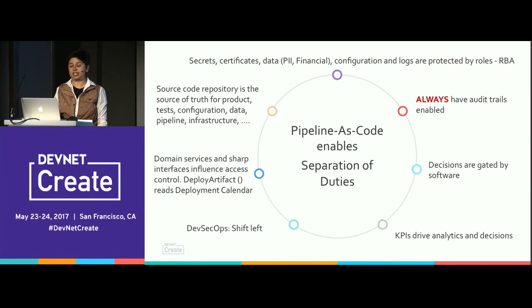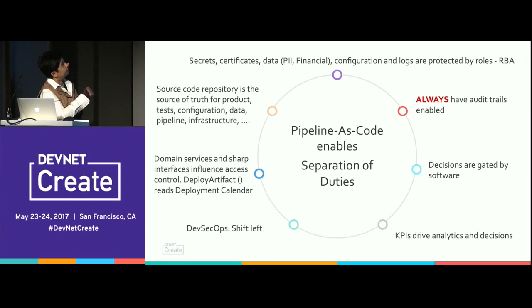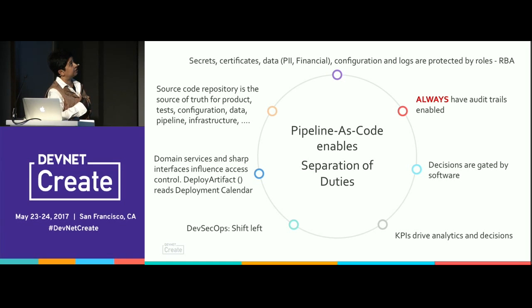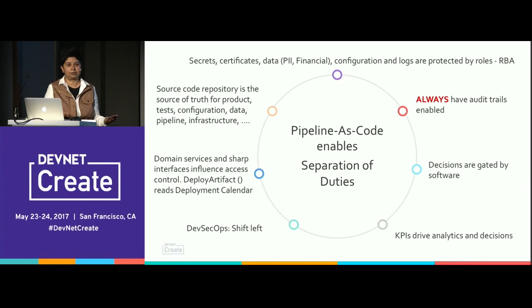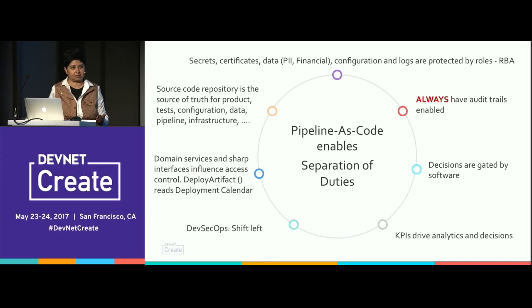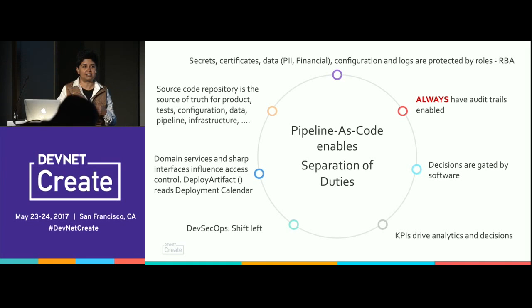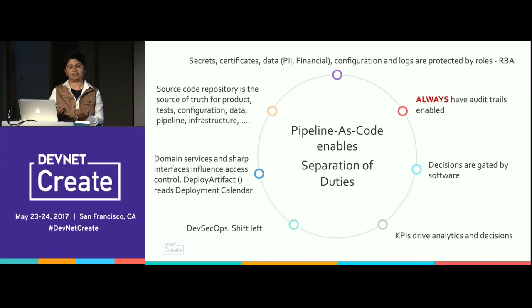Jumping to summary: things we have to do well — secrets, certificates, data, personally identifiable information, financial data. If you get exposed to financial data even accidentally, you will become an insider. Configuration logs should be protected; not everybody should be able to see them. Here comes role-based access. If your role is a developer, there are things you should not see, and the pipeline should not expose these to you. This can easily be set up with credentials and key management. InfoSec or someone has to have access to those secrets and certificates. The pipeline just obeys the rules because you define those rules as an organization.